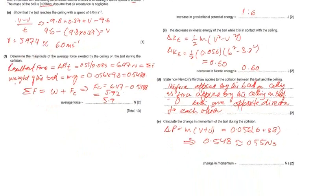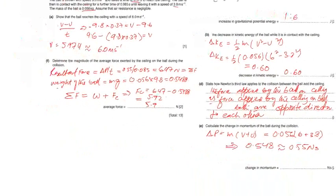Part F: determine the magnitude of the average force exerted by the ceiling on the ball during the collision. The resultant force will be the rate of change in momentum. Change in momentum is 0.5 and the time is 0.085 seconds during the collision. The resultant force equals 6.47 newtons.